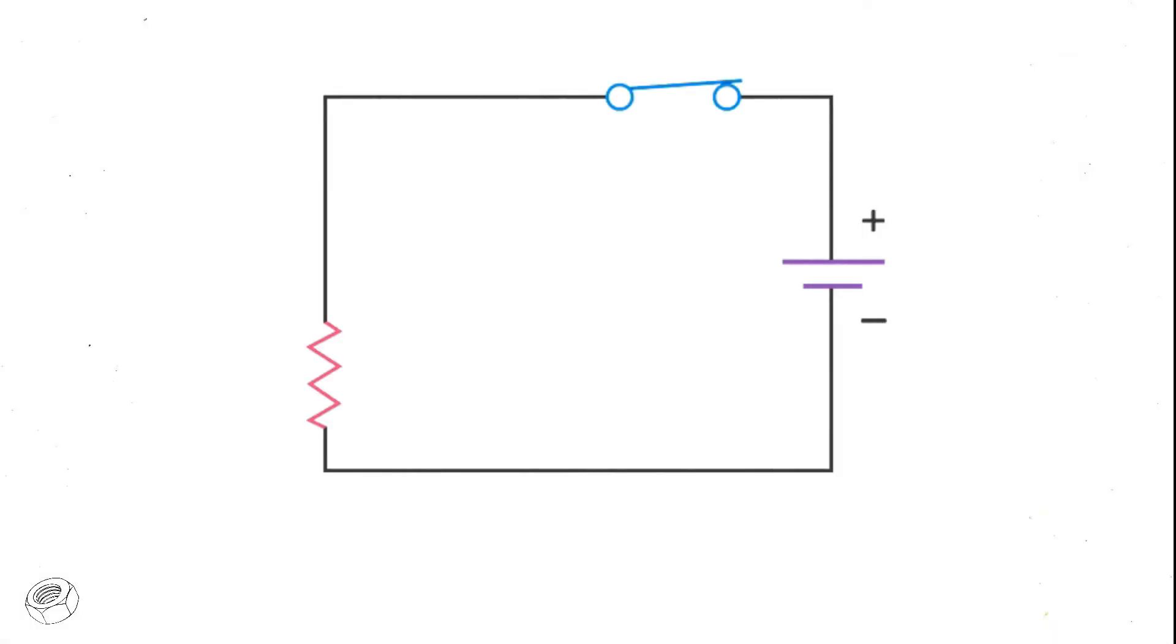Ohm's law is the relationship between current, I, voltage, V, and resistance, R.